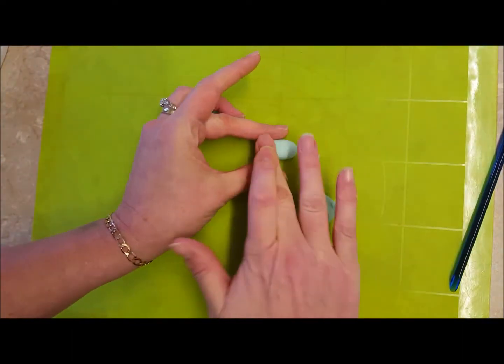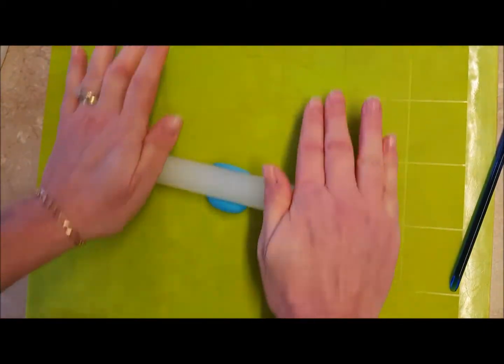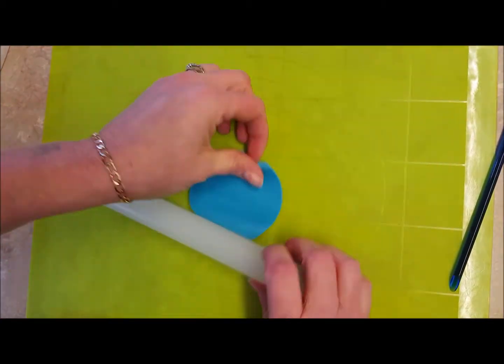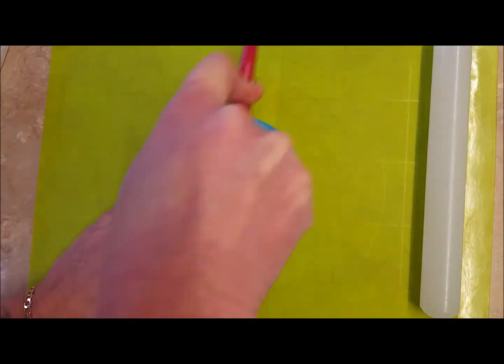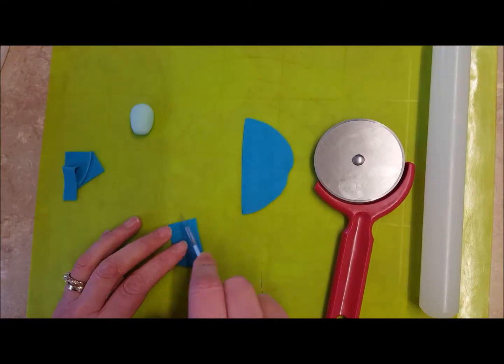Next is the shoes. I used 6 grams for each one of these. Then a darker blue rolled out as thin as I could possibly go and put that into a diamond sort of shape that will go over the back of the shoes.